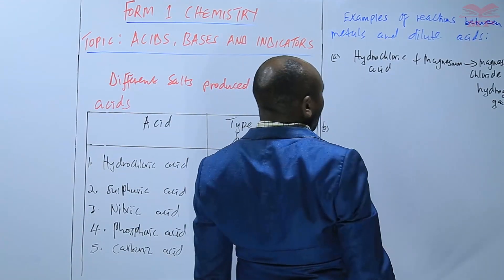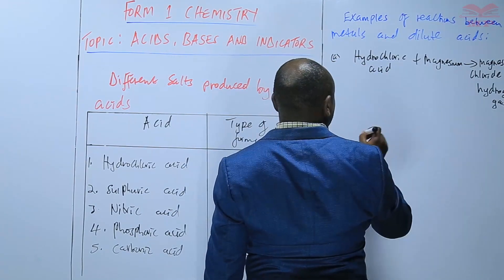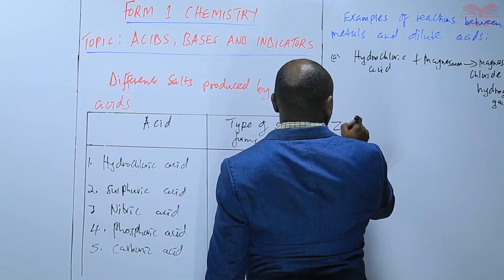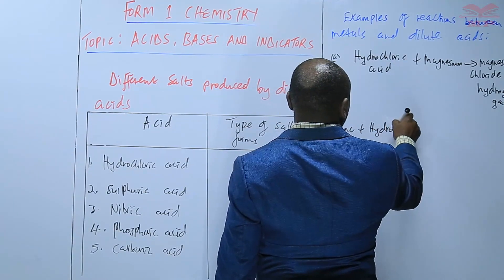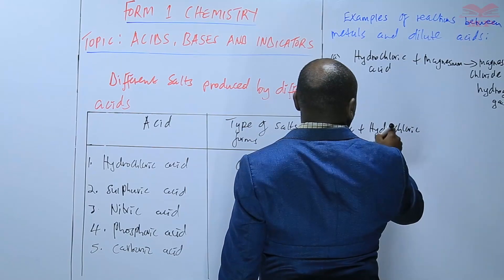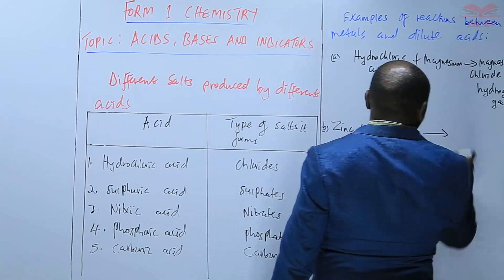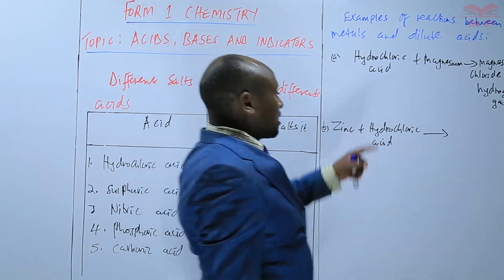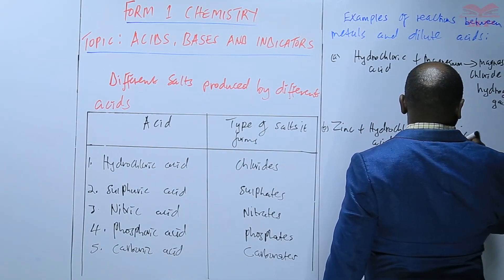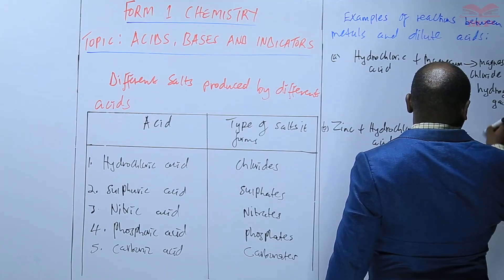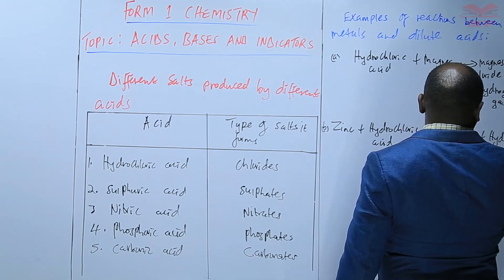Another example still using hydrochloric acid, but now using zinc as the metal: zinc plus hydrochloric acid gives us zinc chloride plus hydrogen gas.